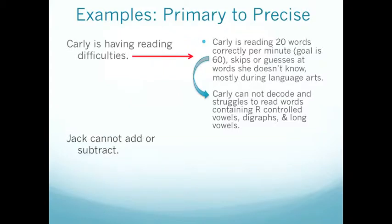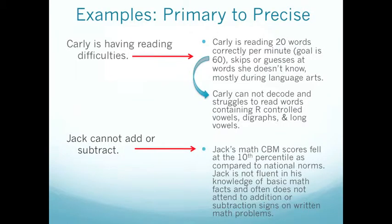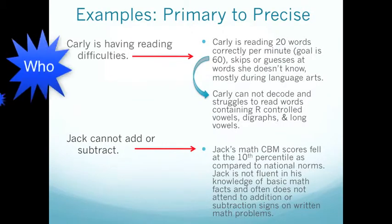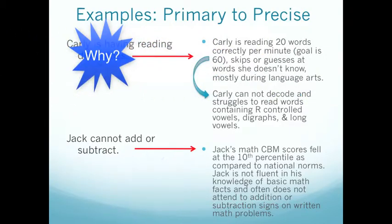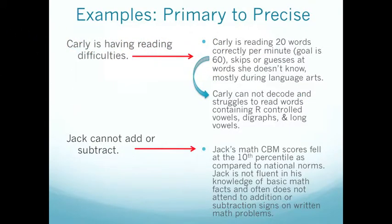Here's another primary statement: Jack cannot add or subtract. This statement in its present form does not lead us towards specific solutions. However, when we get more specific with our precision elements, we start seeing different pathways for possible solutions. We see that he's not fluent in his knowledge of basic math facts, and that he often does not notice the differences between the operations of addition and subtraction.